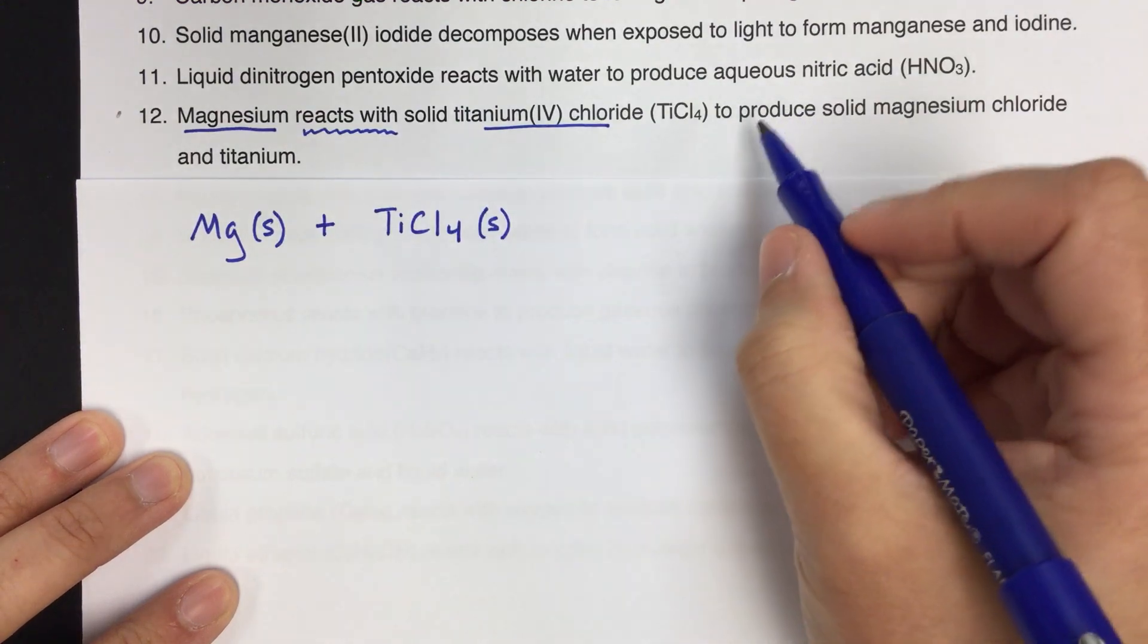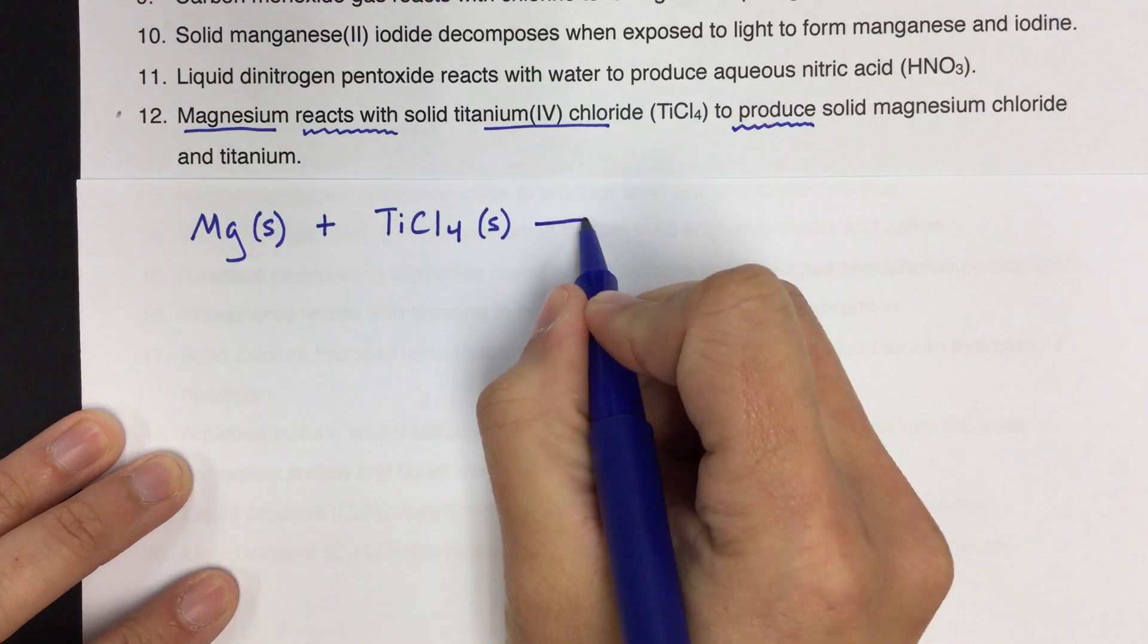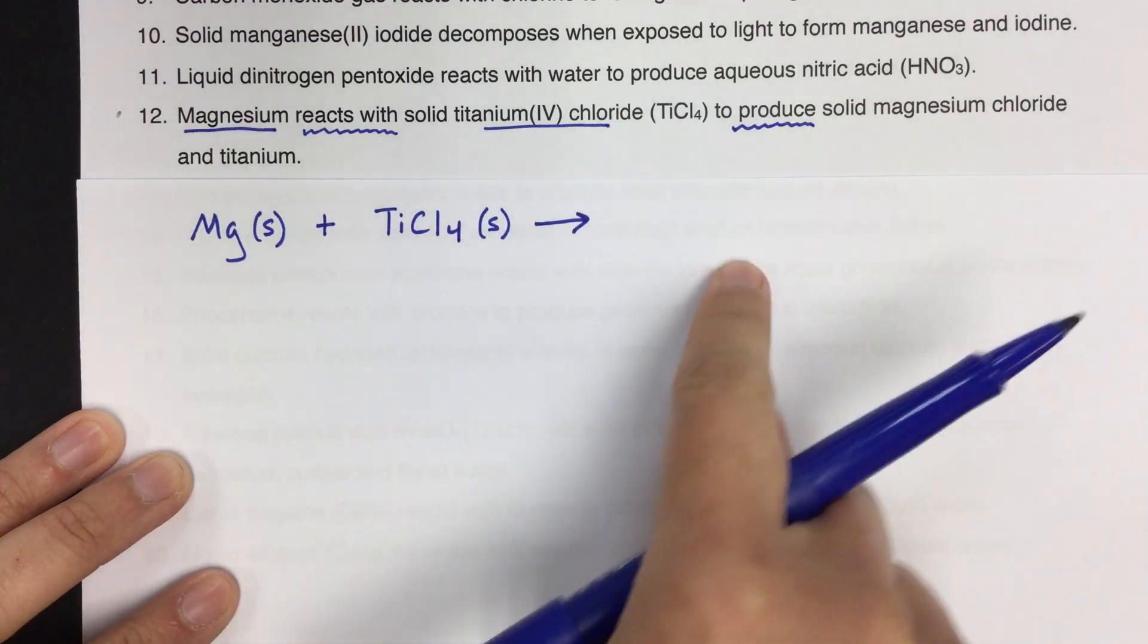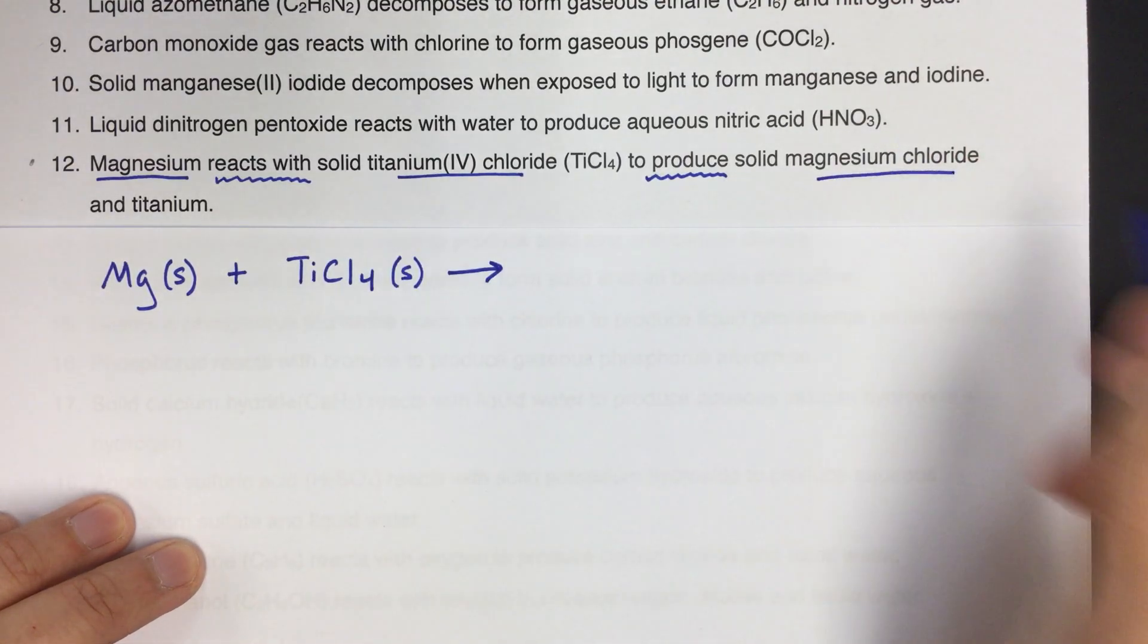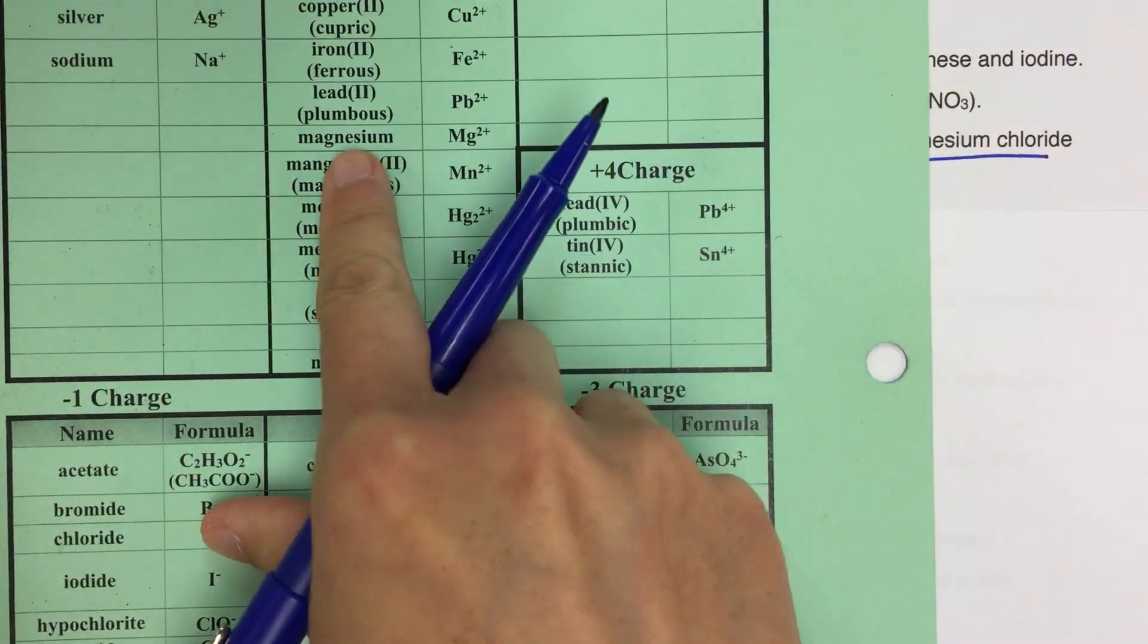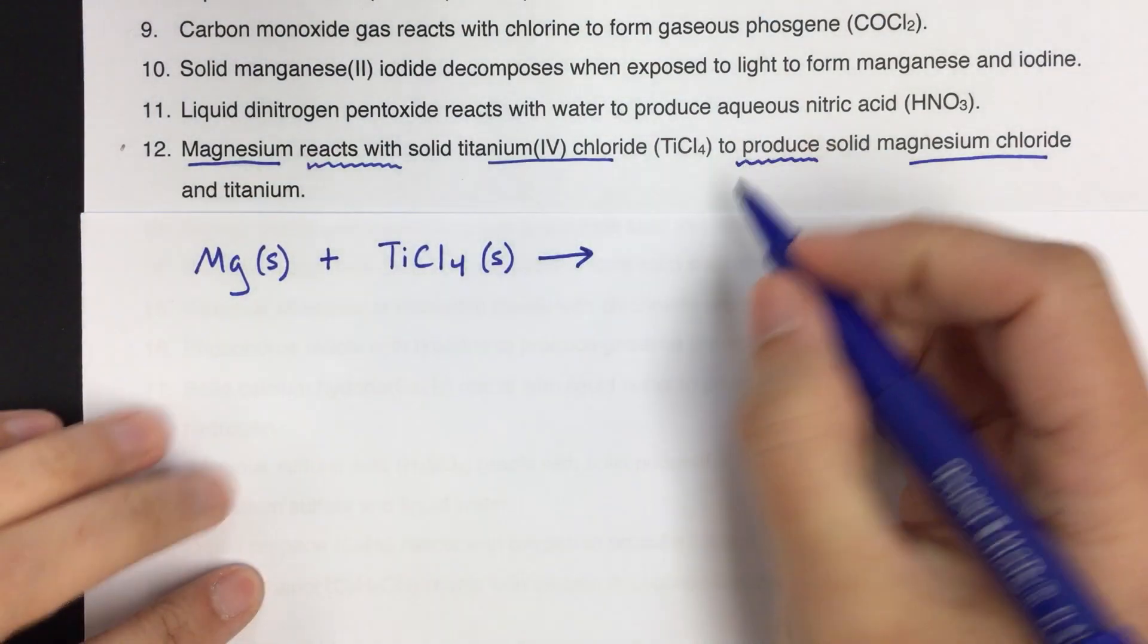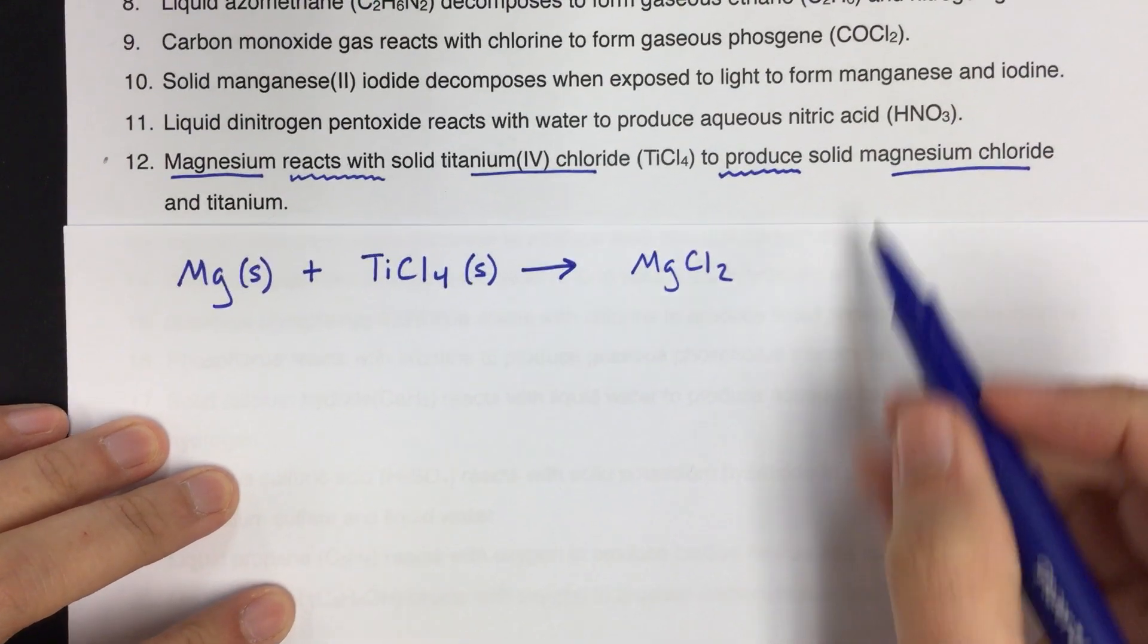So that's another reactant. And then we have another phrase here: 'to produce.' So that phrase is going to be the arrow. When something is produced or formed or generates, all of those phrases would be the arrow. Magnesium chloride, so this is one of the products. And you have to figure out the formula for that. So magnesium chloride, we've got a 2 plus and a minus 1. So it's going to be MgCl2. Leave some space for balancing. And it tells us it is solid. So that's one product.